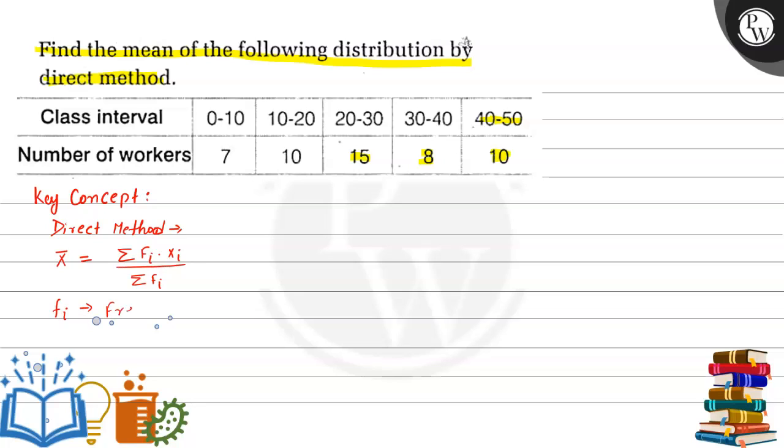fi is the frequency of the given data or observation. And xi is the class mark, which is calculated as: suppose the class interval is from a to b, then xi is calculated as average of the interval. And summation of fi is the total number of observations.